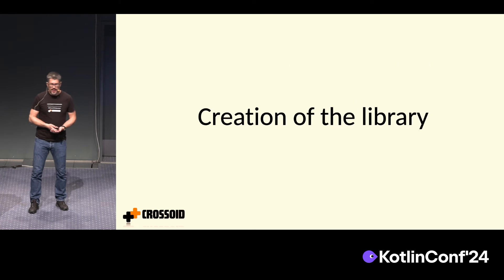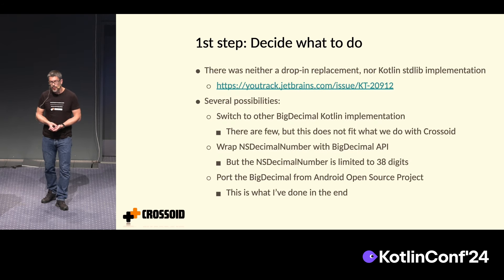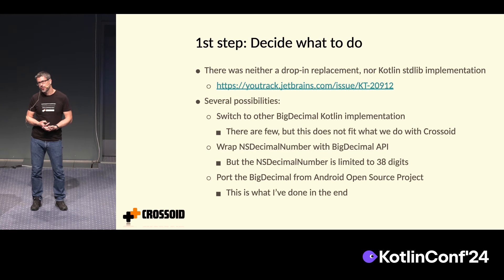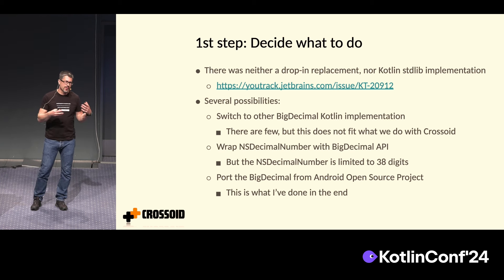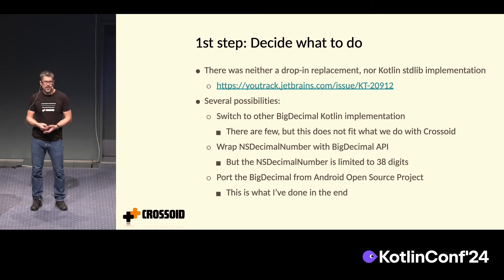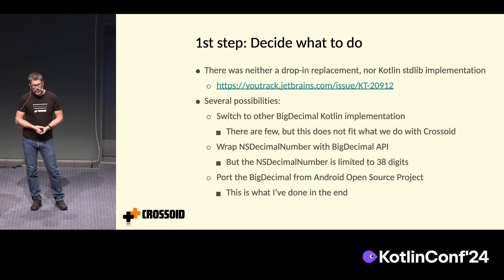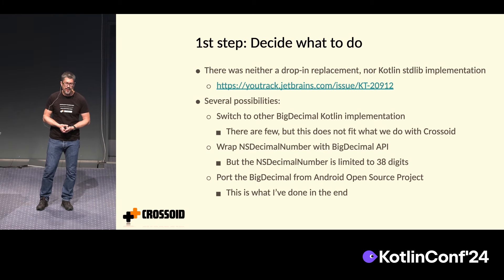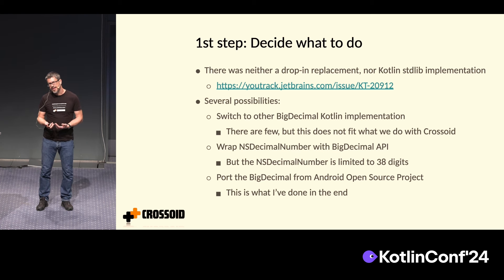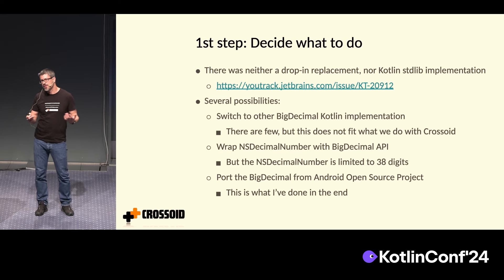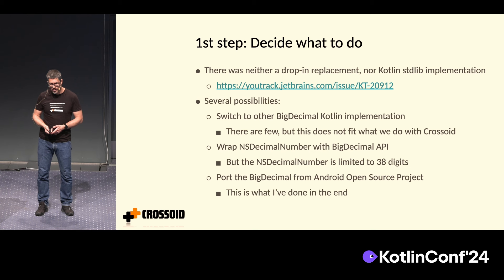So what did I have to do to create this library? The first step was deciding what to do. There are some existing implementations of BigDecimal possible to use for multiplatform projects. Unfortunately, those wouldn't be compatible with our approach where you have the API, continue using it, and just use it on iOS. Also, it would be possible to use expects and actuals for iOS using DecimalNumber, which is part of the iOS API, but that didn't fit us because it didn't have arbitrary precision — it only had 38 digits. So the last obvious choice before writing from scratch was porting it from the Android Open Source Project. That's what we did.